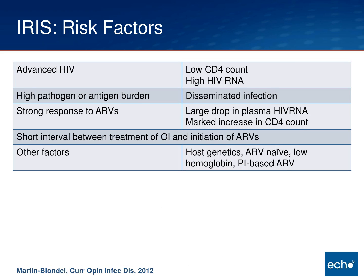Risk factors for developing IRIS are what you'd expect. Patients usually have advanced HIV to start with, marked by a low CD4 count and a high HIV RNA level. Those with more severe IRIS have a high pathogen or antigen burden, so there's a lot for the immune system to respond to once it's able. There's typically a strong response to antiretroviral therapy — a rapid drop in plasma RNA levels and marked increases in CD4 counts seem to track with IRIS development. The short interval between treating the opportunistic infection and initiating ART also matters, as there are probably more pathogens or antigens around for the immune system to respond to.